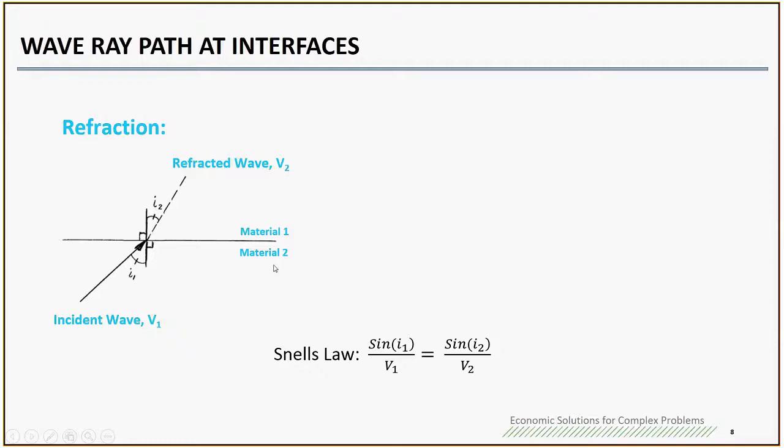Typically the material at a deeper location has a higher shear wave velocity, so basically V2 is greater than V1. Based on this equation, I2 is typically less than I1. At the same time you will see reflection, so the wave like a mirror will reflect. Since it is in the same material, it still follows Snell's Law, so these two angles are the same.